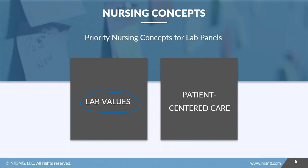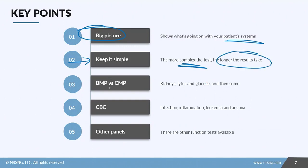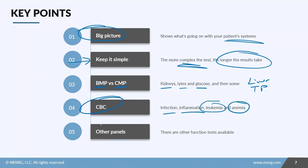To recap: these different types of lab panels give you a big picture of what's going on with your patient's systems. The more complex the test, the longer results take to return. The BMP covers kidneys, electrolytes, and glucose. The CMP is the BMP plus liver function and proteins. The CBC provides insight into infection, inflammation, leukemia, or anemia. There are also specific panels like liver function tests and renal panels that give snapshots into specific organ function.